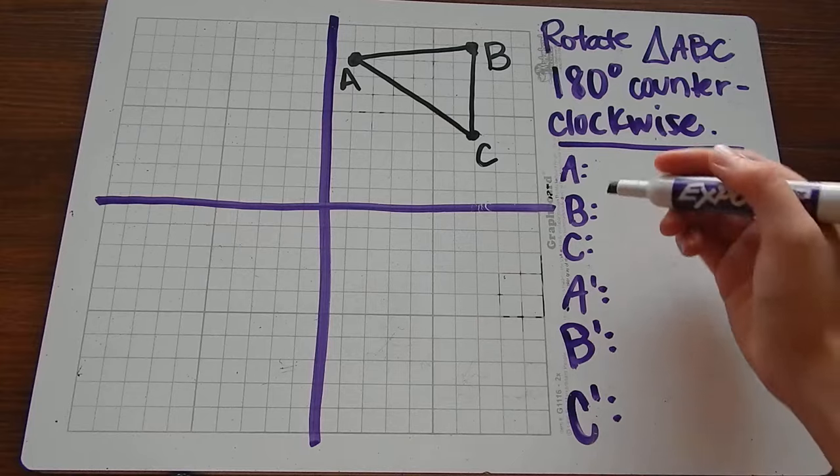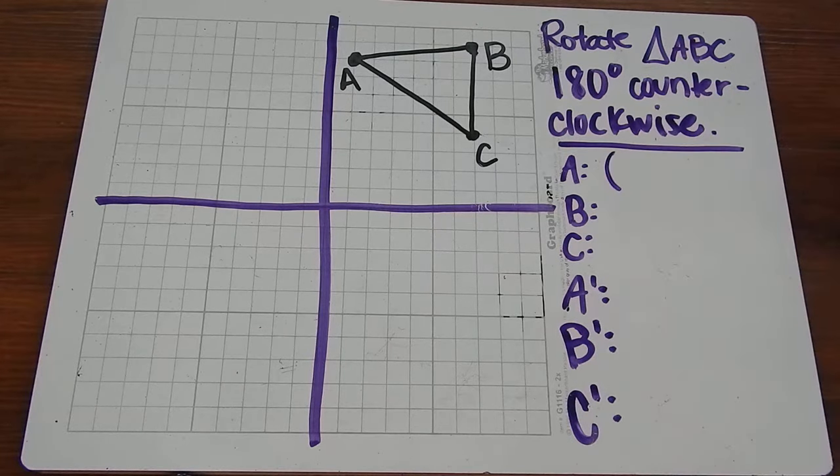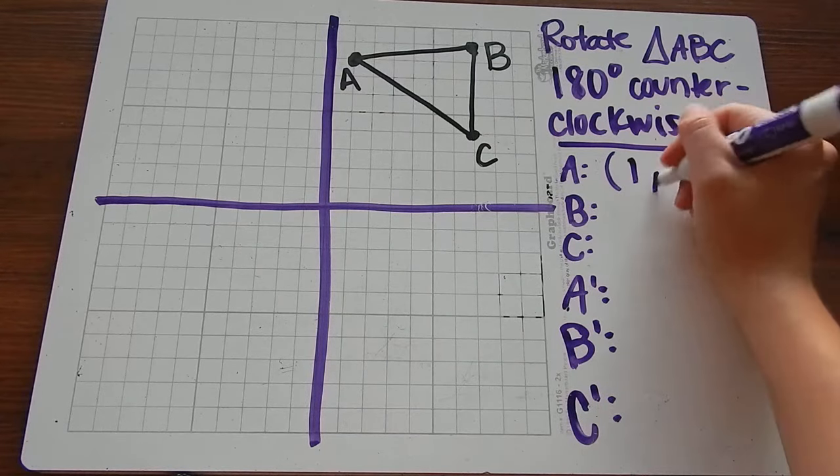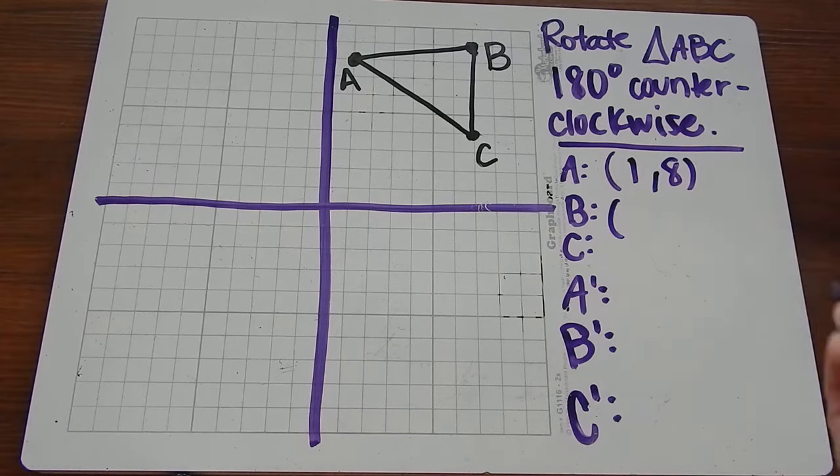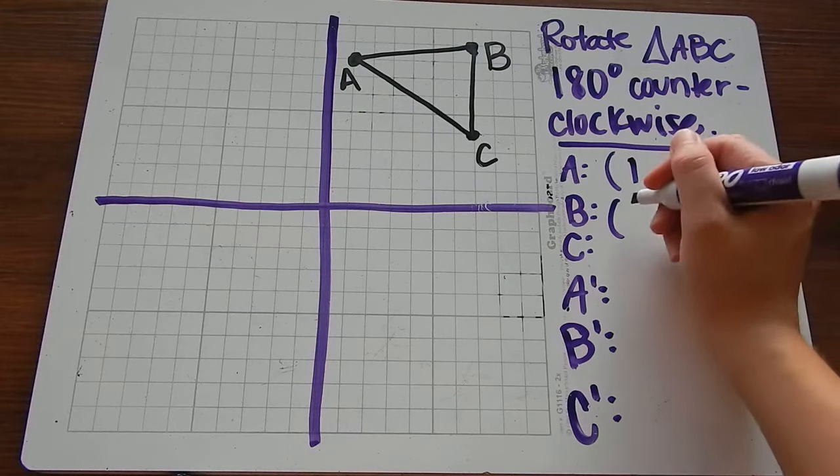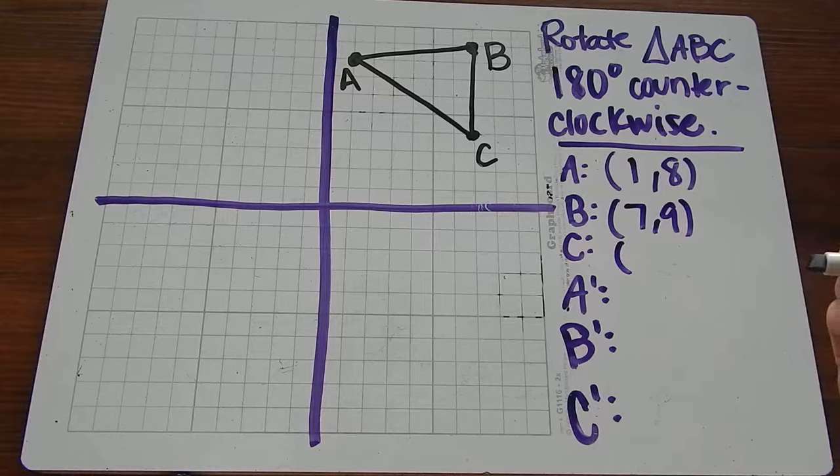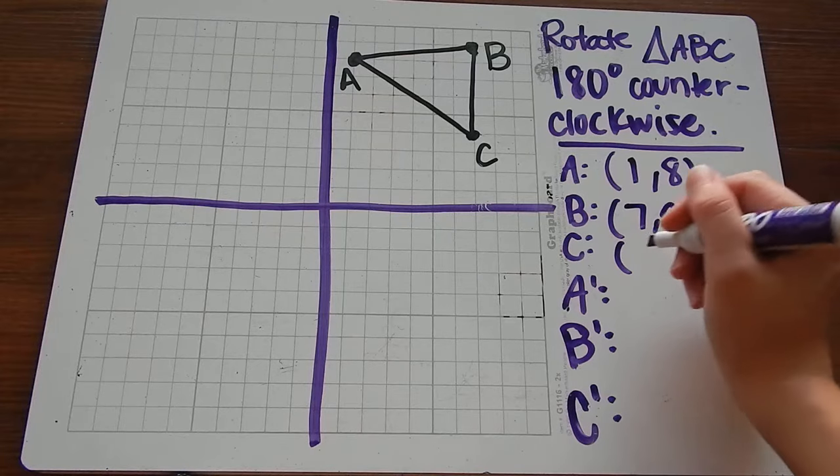The first thing I want to do is label or list my points A, B, and C, the coordinates of my points. So point A is at (1, 8), point B is at (7, 9), and point C is at (7, 4).